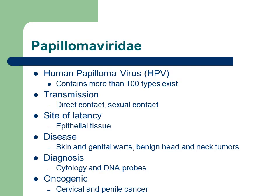Another DNA virus is from the family Papillomaviridae, which includes the virus HPV, or human papillomavirus. There are more than a hundred types of HPV that exist. Transmission is through direct contact as well as sexual contact. The site of latency of HPV is epithelial tissue. HPV more commonly causes genital warts, though you can get warts on any area of the skin, and it can also cause benign head and neck tumors. HPV is commonly diagnosed through examination, cytology-based tests, ELISA-based tests, and DNA probes.